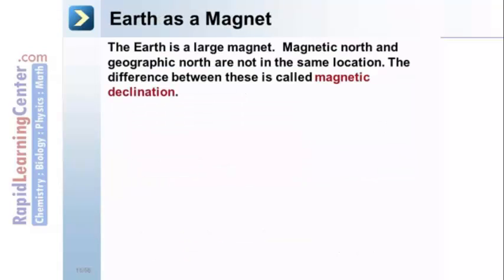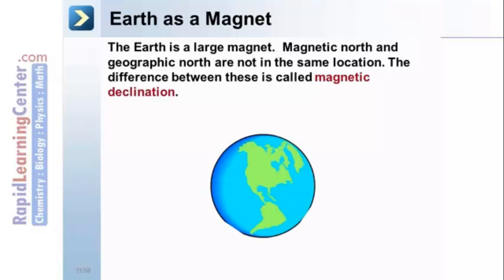The Earth is a magnet. The Earth itself is a large magnet. Magnetic north and geographic north are not exactly in the same location. The difference between these two is called magnetic declination.